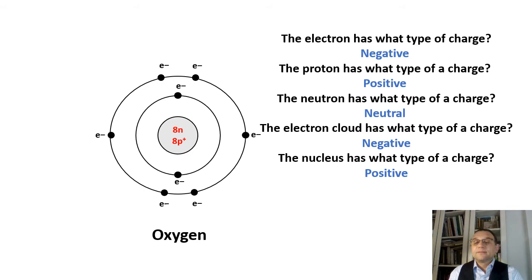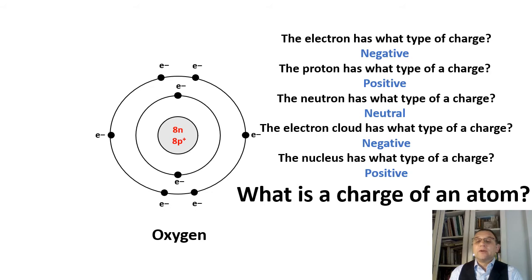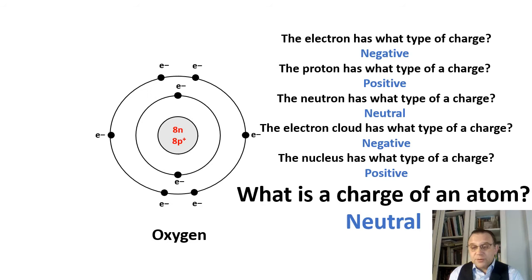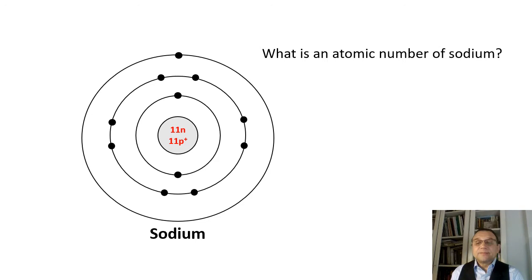And the big question: what is the charge of an atom? The answer is neutral. Look at the atom of oxygen — it has eight protons and eight electrons: eight positively charged particles and eight negatively charged particles. What is the atomic number of sodium? Remember, the atomic number is the number of protons, so the atomic number of sodium is 11.